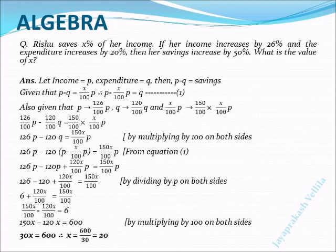Keep like terms together, we get 150x by 100 minus 120x by 100 equal to 6. Multiply both sides by 100, we get 150x minus 120x equal to 600. Therefore 30x equal to 600, so x equal to 600 by 30 equal to 20. The value of x equal to 20.